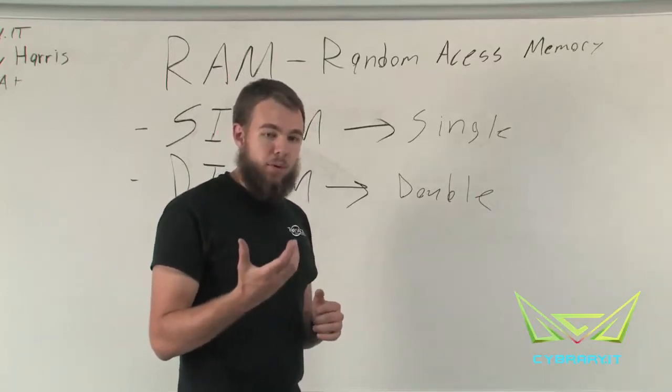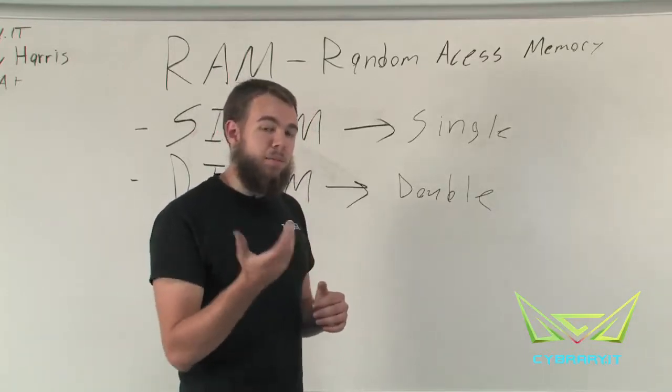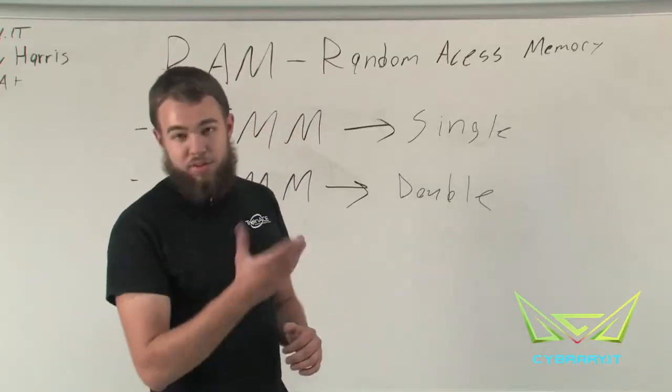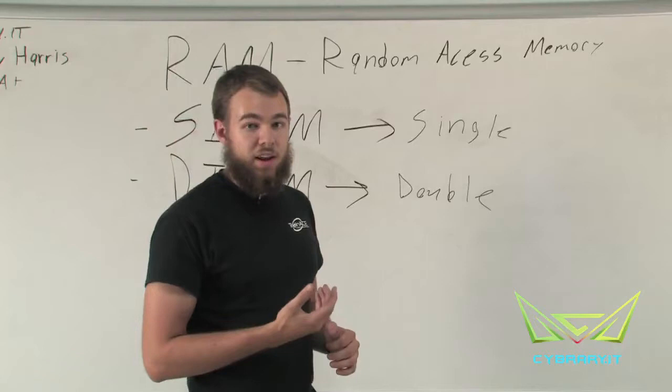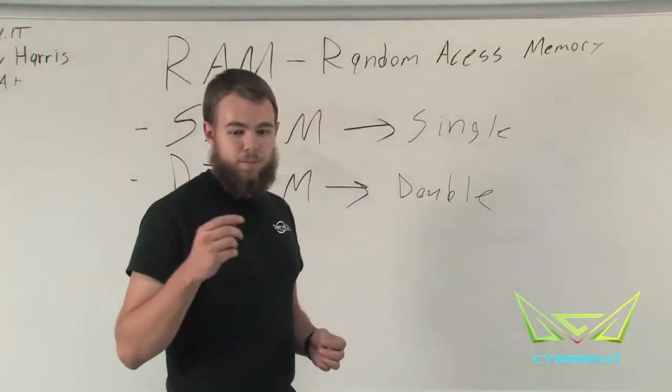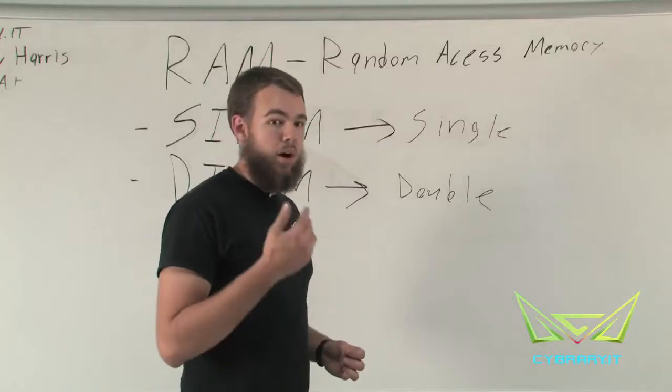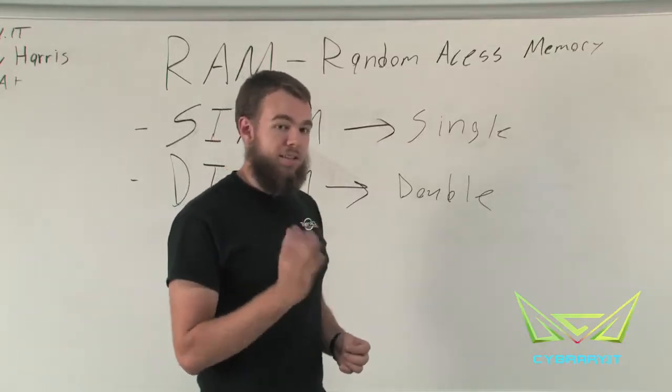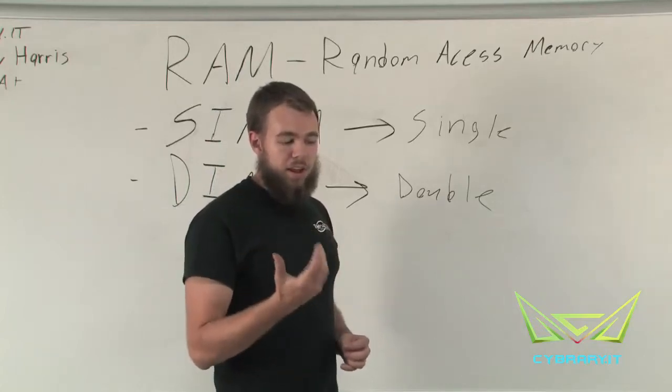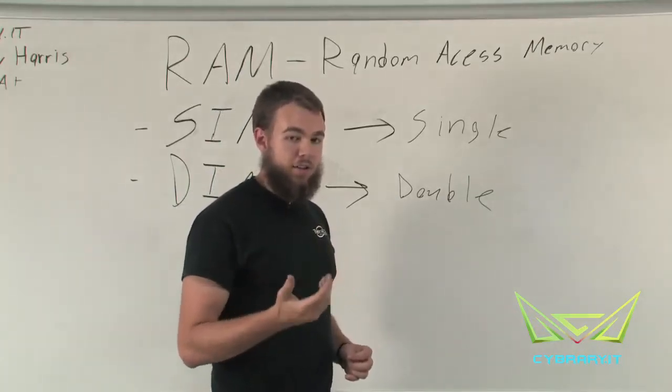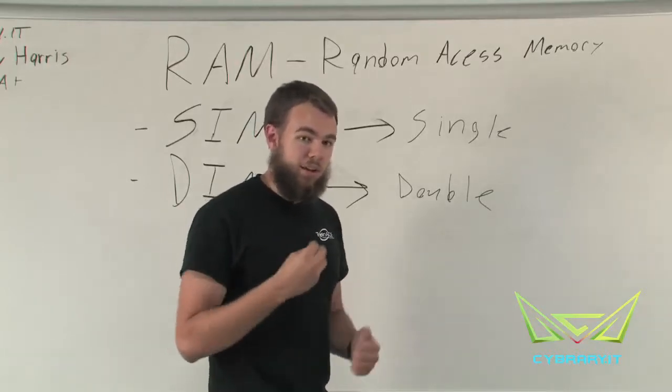Now, SIMM, even though it's one group, may sometimes have two sets of pins. Both sides of the card have pins on either side. This isn't because it's like DIMM, where it can be accessed independently, but it's actually a dual-sided SIMM. It's one group of independently accessed memory, but they're connected together to simulate working as two groups.